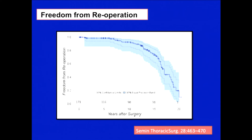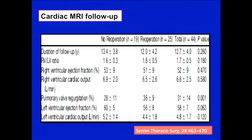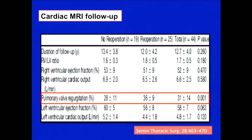Nevertheless, it does have significantly good results for a meaningful period of time. From his MRI data, he concluded that it is not the pulmonary regurgitation per se that is the problem causing re-intervention, but more specifically the pulmonary valve regurgitation fraction that is the main cause for re-operation. So if one could address that particular aspect of the pulmonary valve, you can probably overcome this problem.